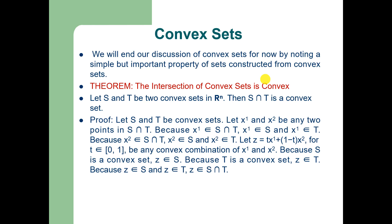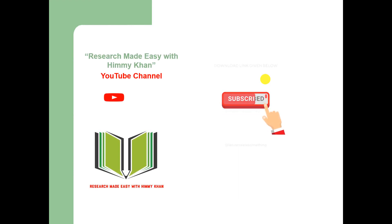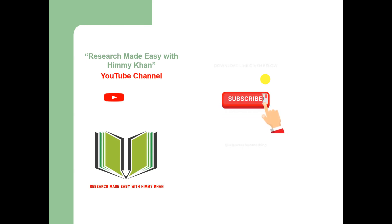I uploaded this video because convexity of sets is widely used in microeconomic theory, and we also have convex functions, so I started with the notion of convex sets. Every convex combination of any two points in S intersection T is also in S intersection T, confirming it is a convex set. I hope this was informative. PhD and MPhil students should be aware of Euclidean space, n-dimensional space, and the convexity of sets, as we will apply these concepts later in consumer theory and producer theory.